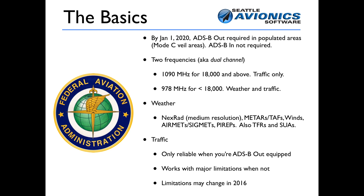There are two frequencies for ADS-B. One is 1090 megahertz — it's an international standard designed for planes flying in the flight levels, and it is traffic only. 978 megahertz is a frequency the FAA created specifically for general aviation flying below 18,000 feet. It has traffic as well, but it also includes a sweetener: weather information.